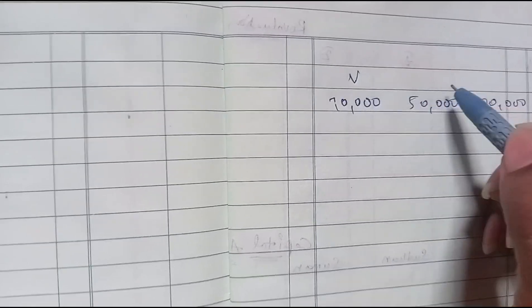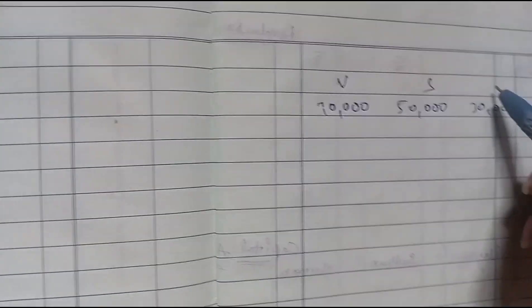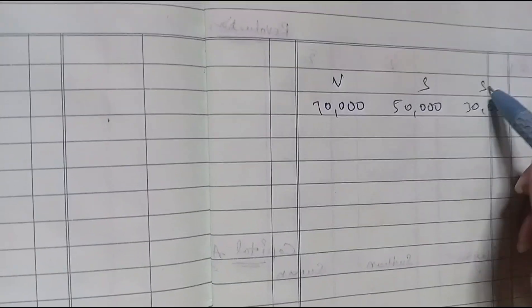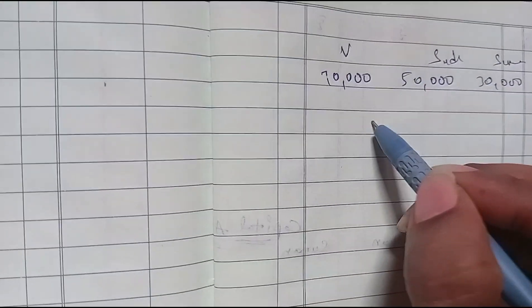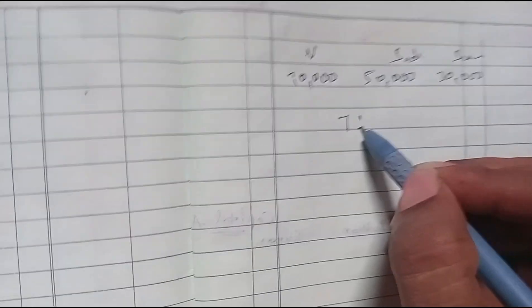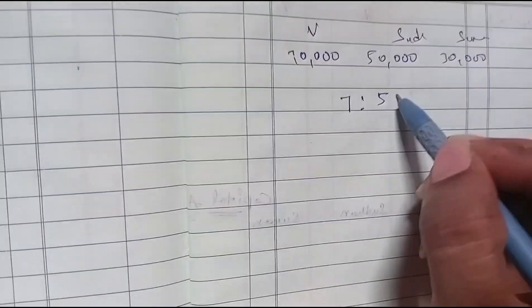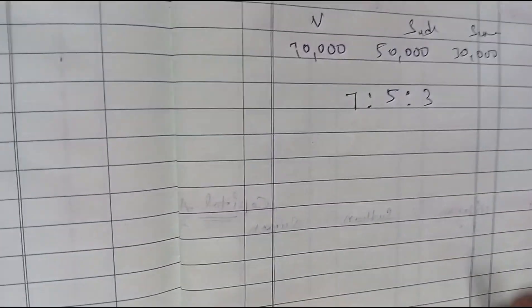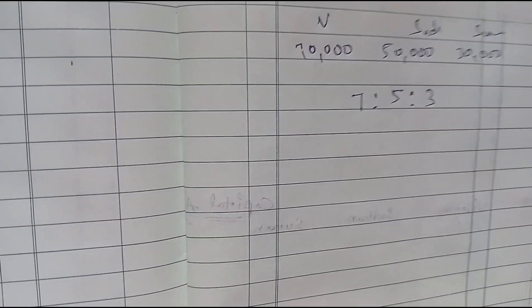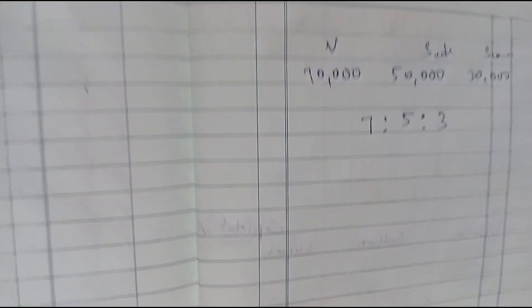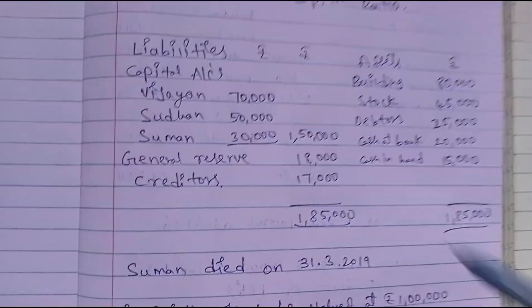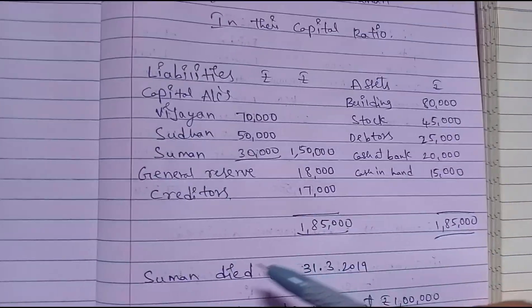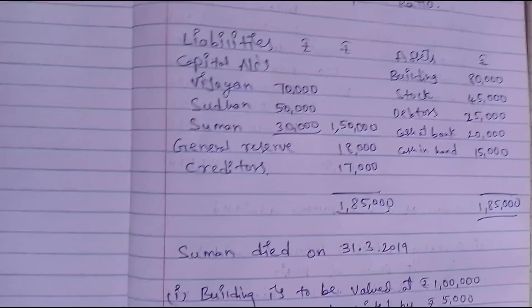The three partners are Vijayan, Sudhan, and Suman. If you look at the ratio, it is 7 : 5 : 3. This is the balance sheet, showing liabilities — generalised creditors — and assets.